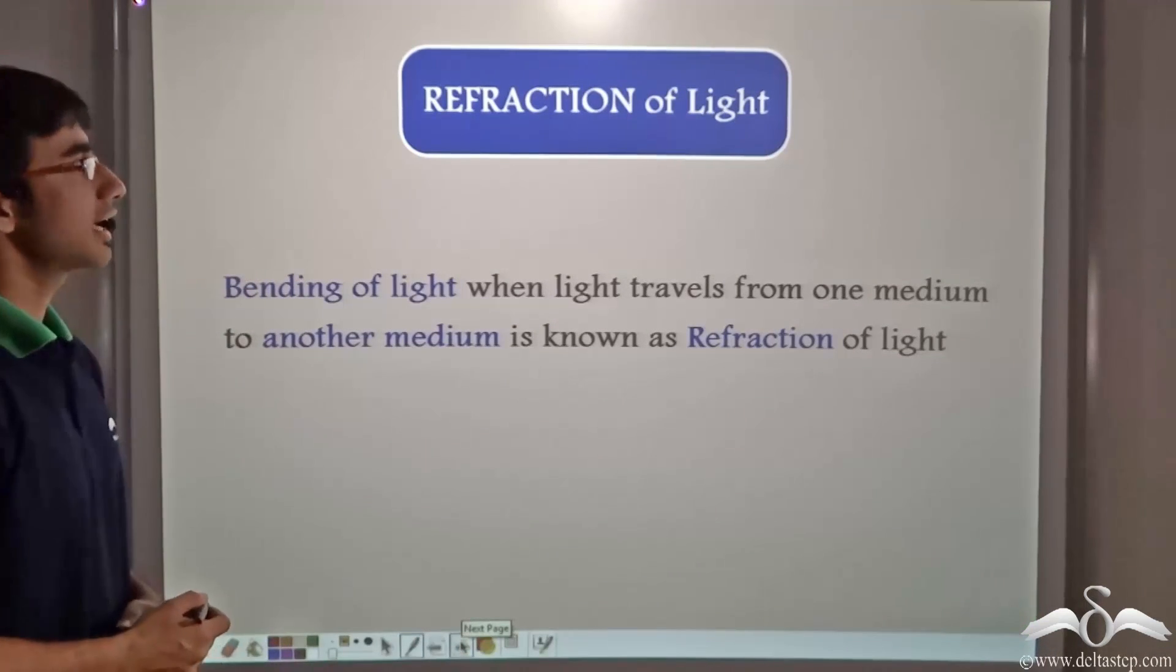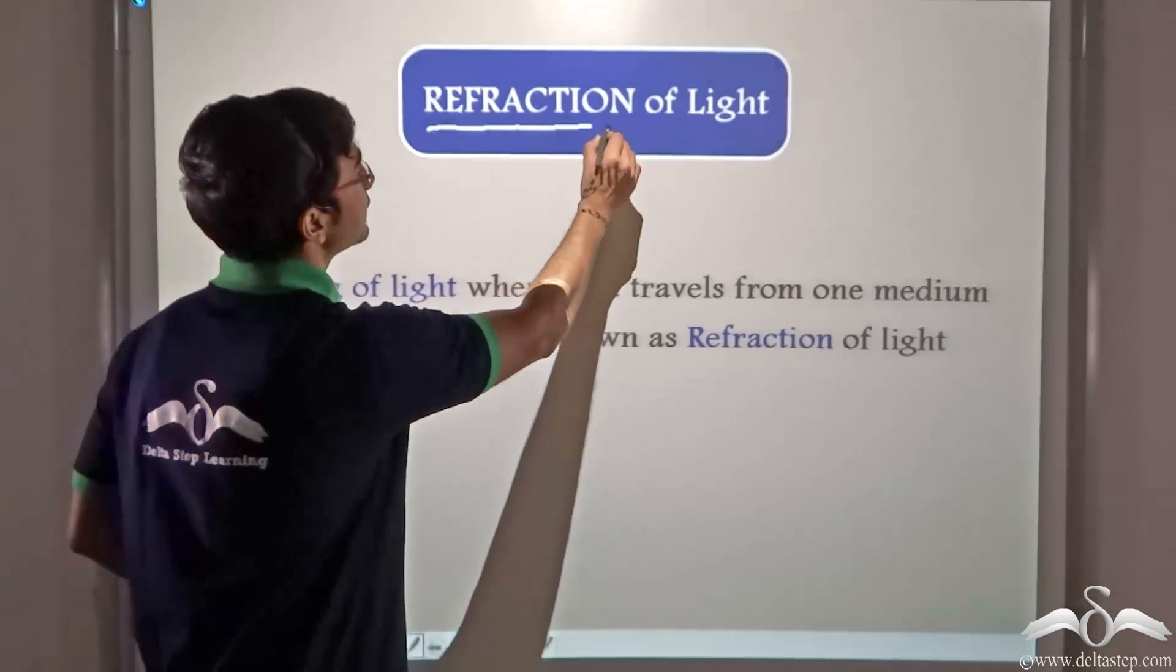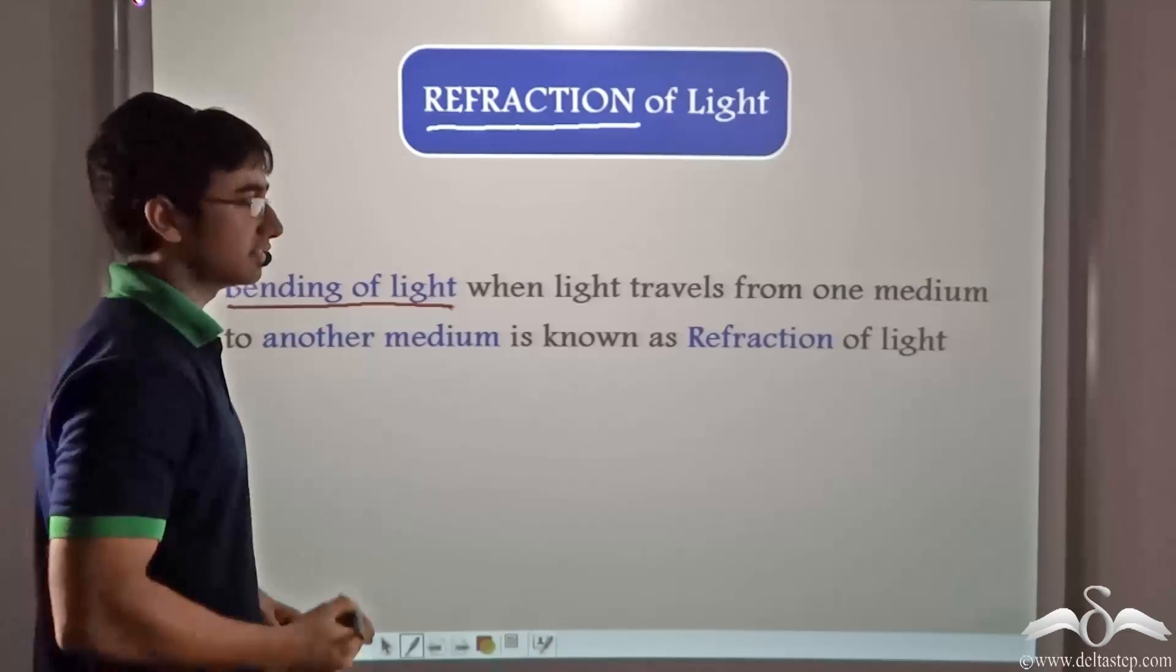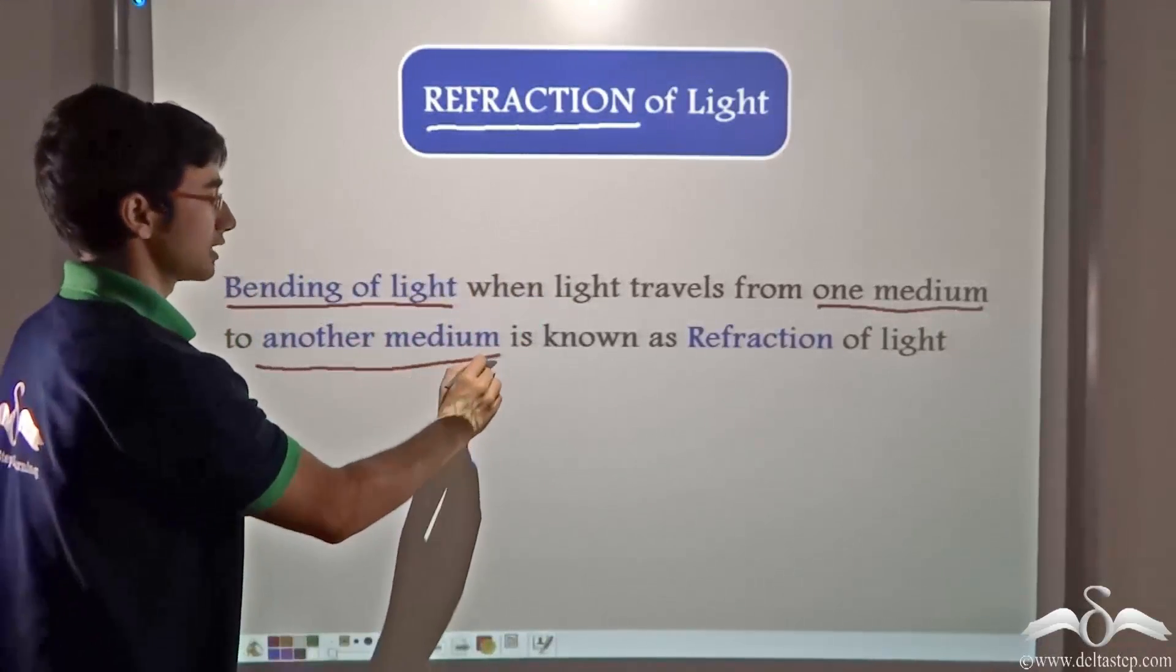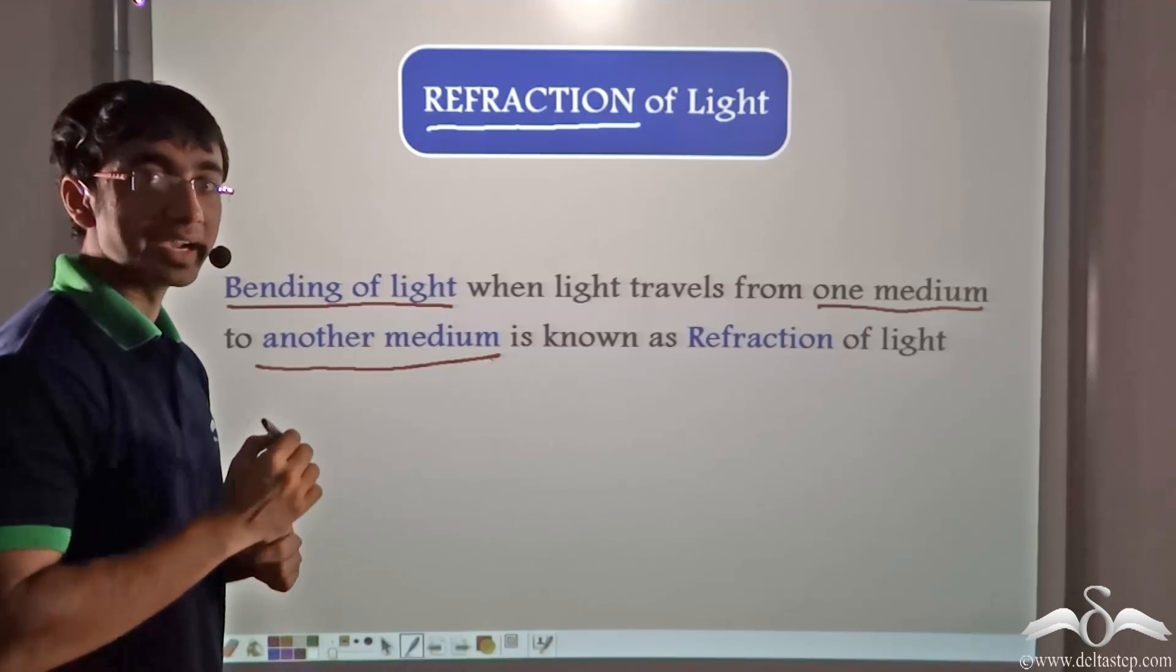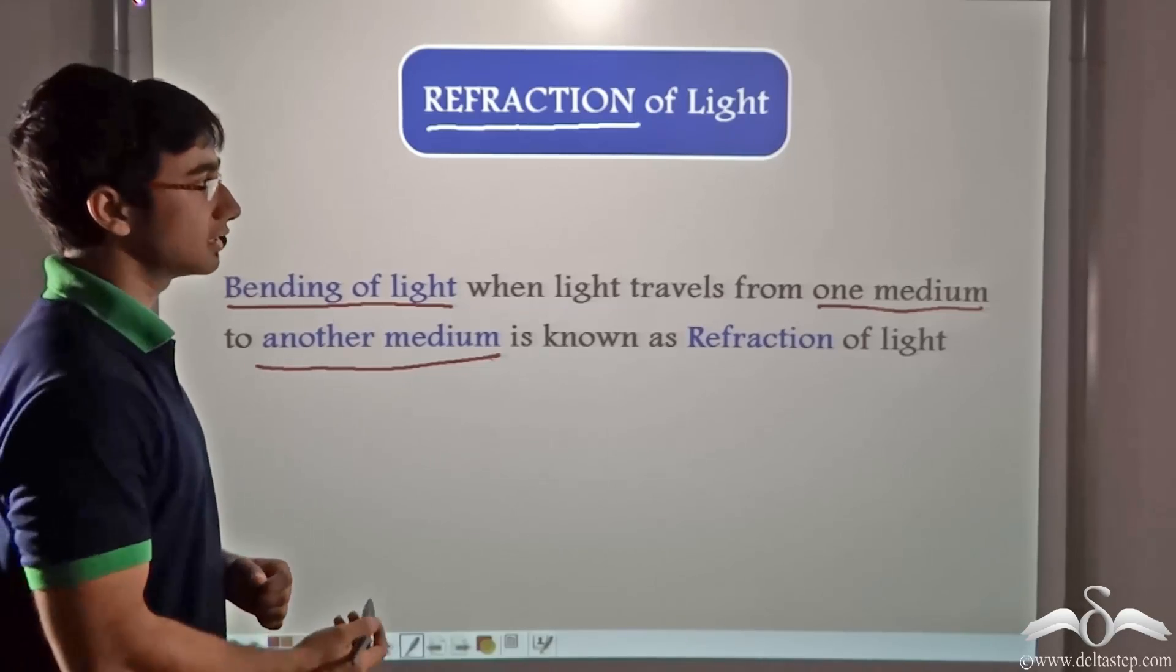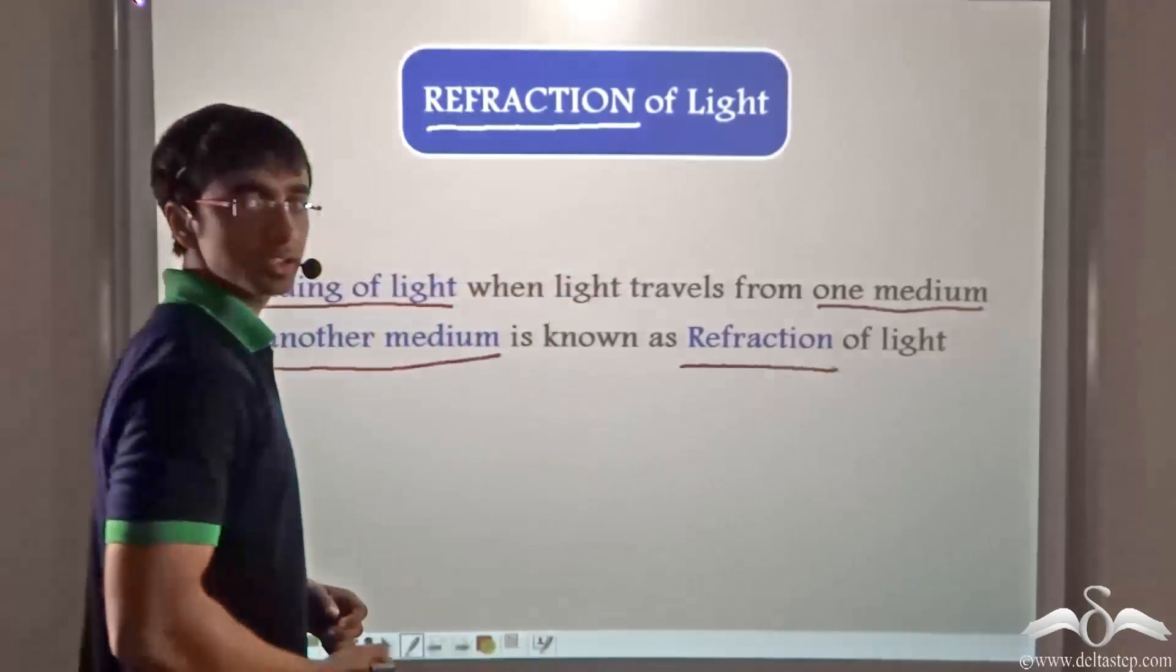This is known as the refraction of light. How can we define refraction of light? The refraction of light is the bending of light when light travels from one medium to another medium. As you saw in the previous case, when light travelled from air to water, there was bending of light. When it travelled from water to glass, again there was bending of light. So this bending of light from one medium to another is known as refraction of light.